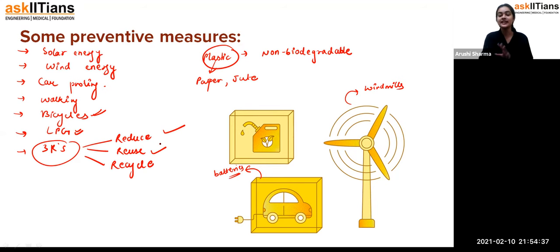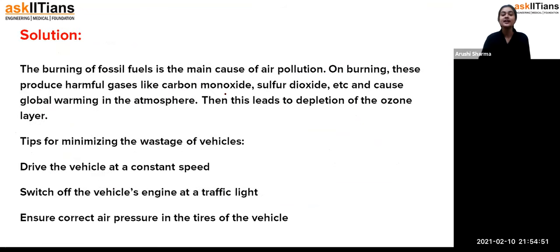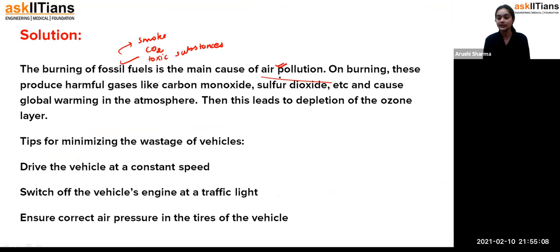Practice question: What is the major cause of air pollution? The burning of fossil fuels is the main cause of air pollution, as it releases smoke, carbon dioxide, and many other toxic substances like carbon monoxide (CO) and sulfur dioxide (SO₂) into the air, directly contaminating it. These gases cause global warming and lead to the depletion of the ozone layer.